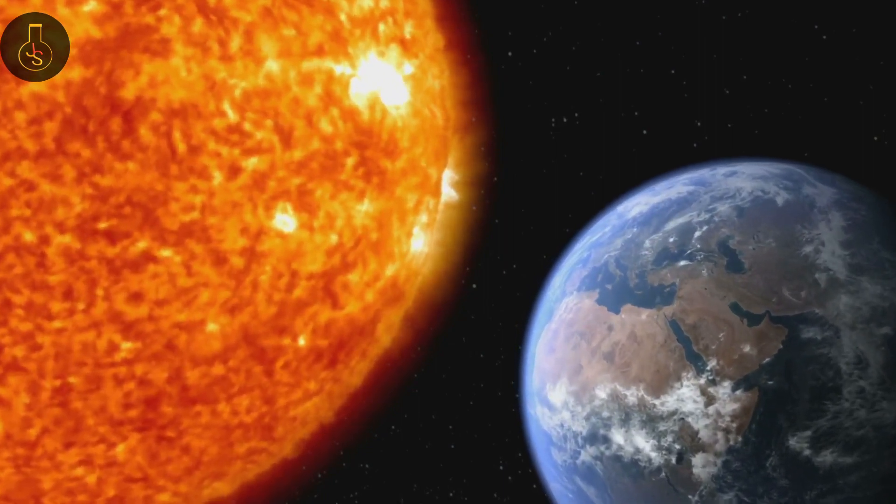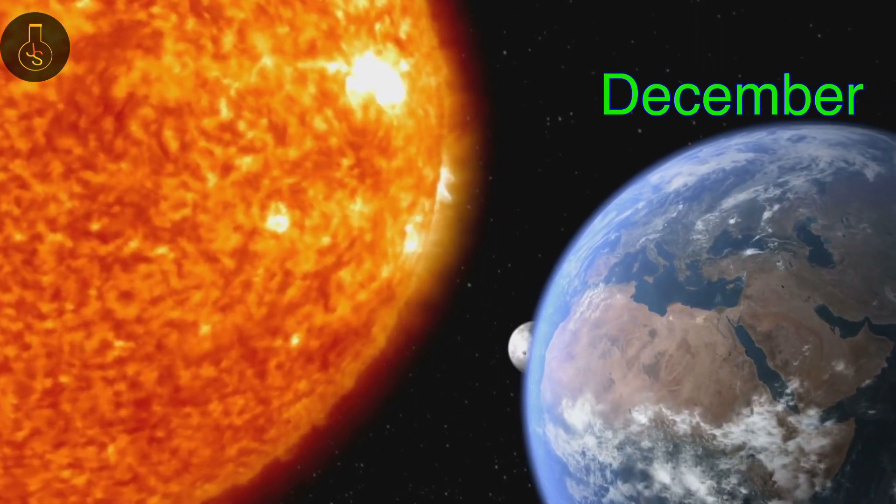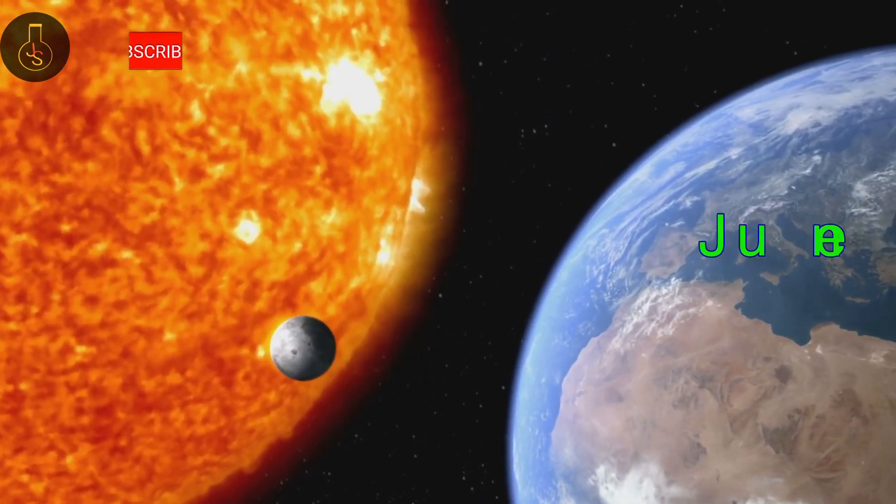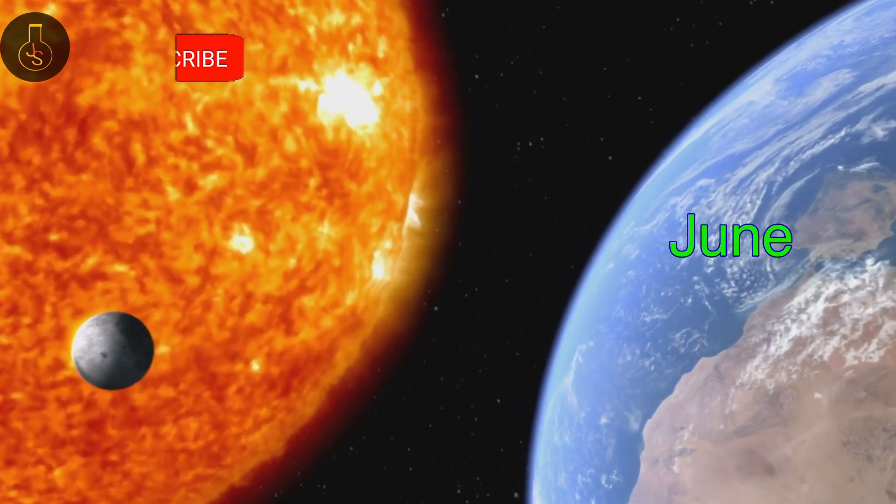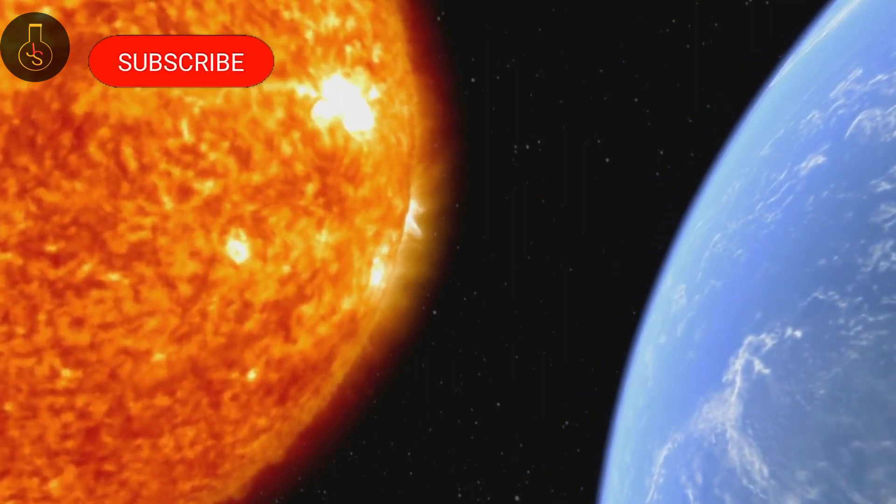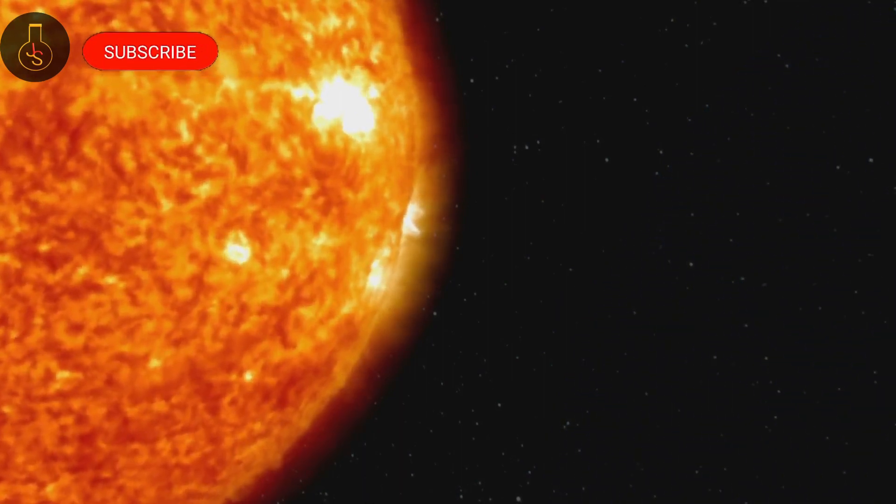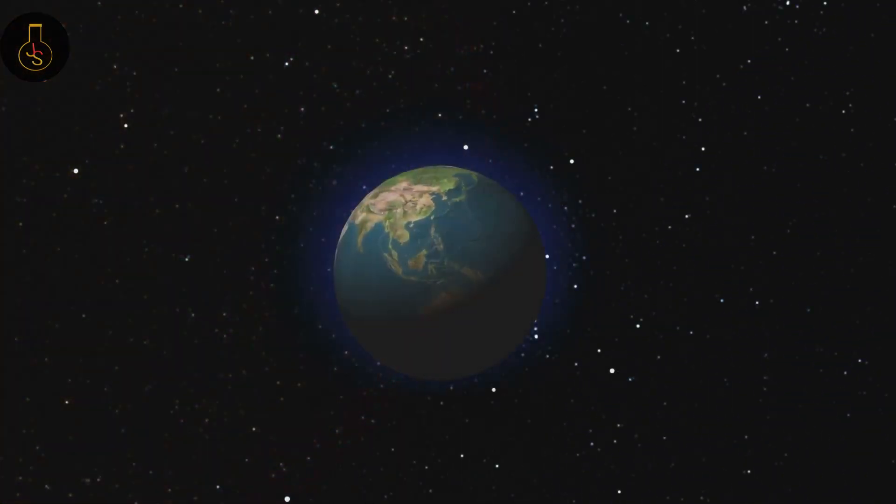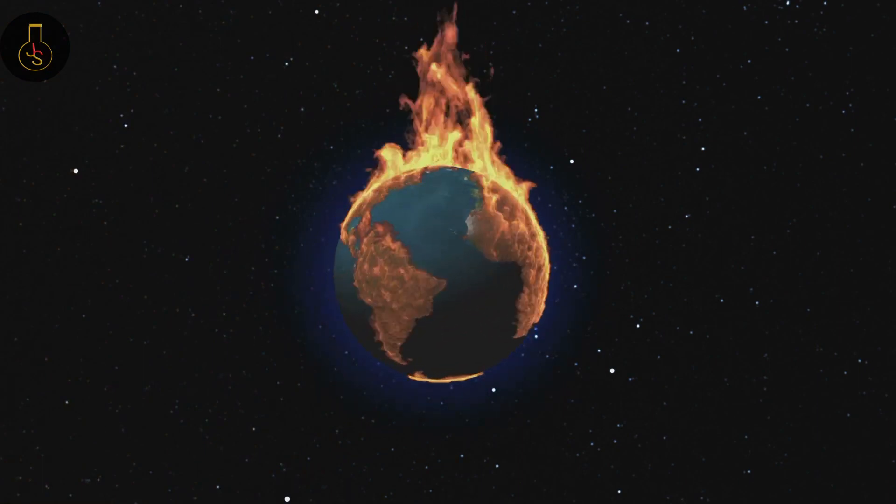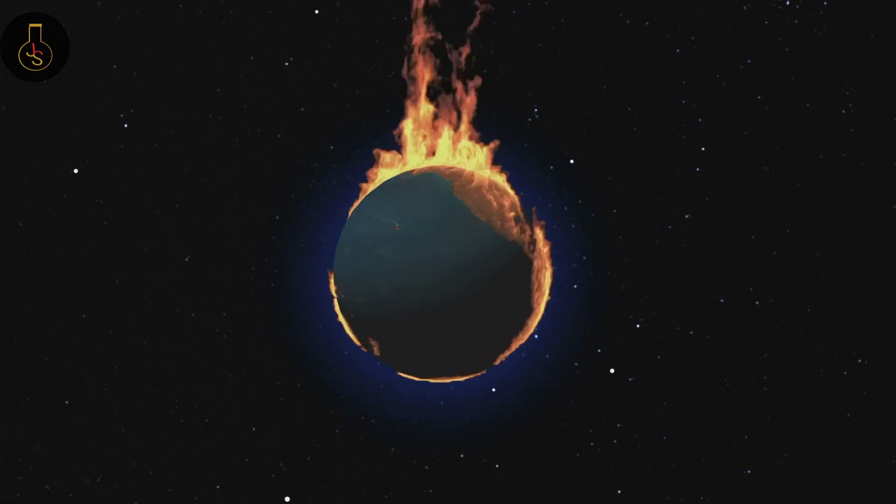It is true the Earth gets closer to the sun every December and further every June. And these little changes do affect the climate. But it is too little to cause any severe catastrophic effect to the Earth. So take a sigh of relief. We're safe again.